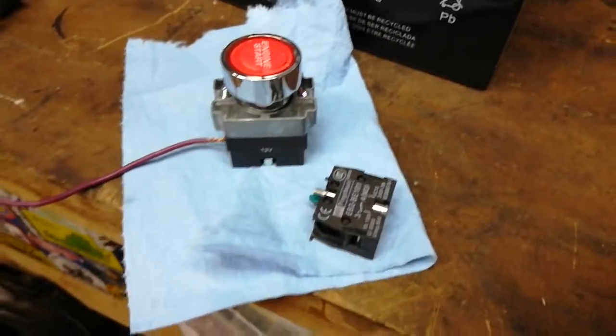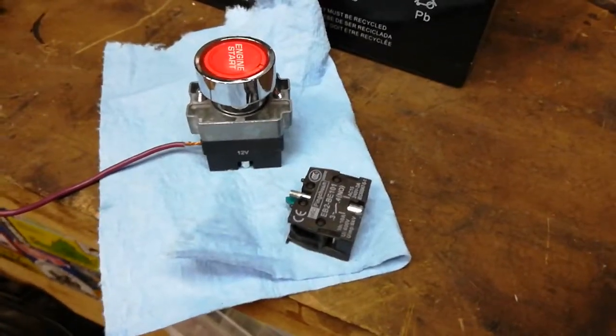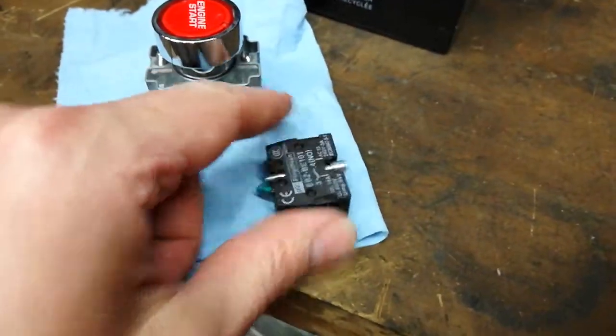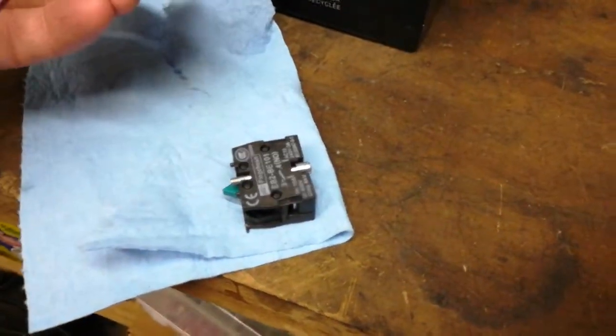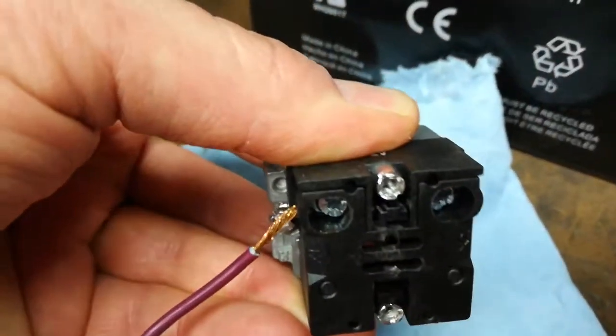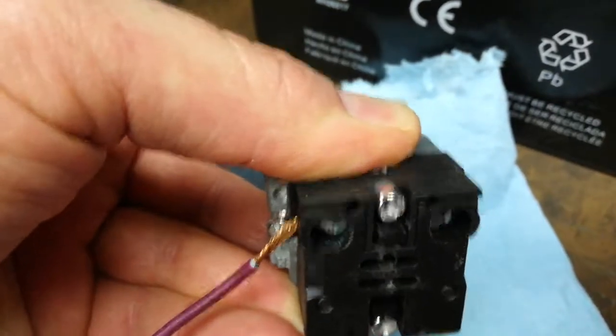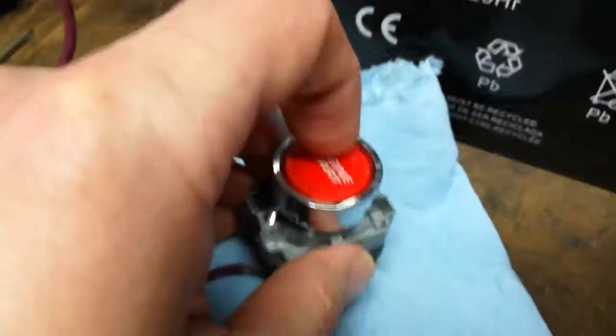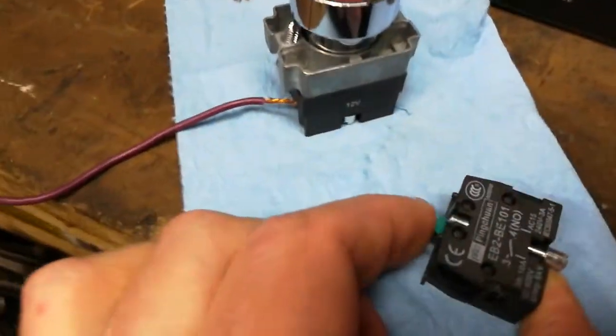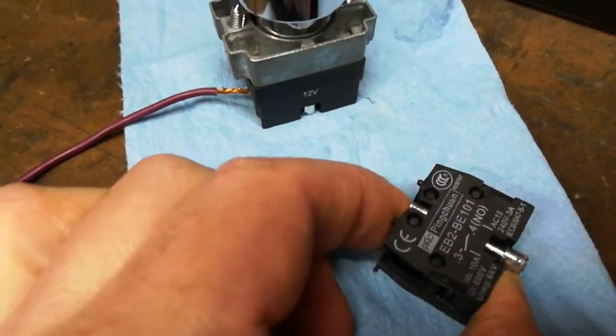So this switch, you might have remembered in my first video, I told you is actually two switches. So there's this switch and then this switch. And if you look at this one when I push the button, hopefully you can see that black little piece come up. What that does is push on this little green guy, which then activates this switch here.